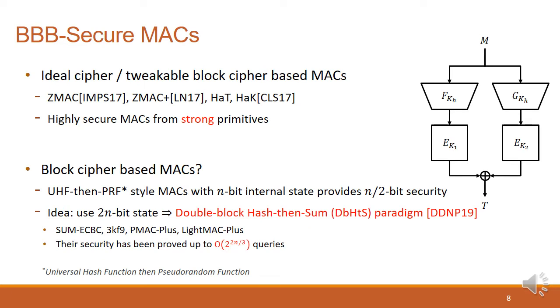Fortunately, there are some MACs that provide BBB security. ZMAC, ZMAC+, HAT, and HAK are the MACs based on tweakable block ciphers or ideal ciphers. They all have N-bit security where N denotes the block size, but this high security could be achieved by using strong primitives. However, for the block cipher-based MACs, it seems hard to achieve BBB security since any UHF-then-PRF style with N/2 internal state provides only birthday-bound security.